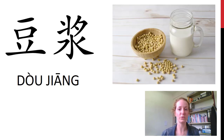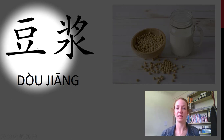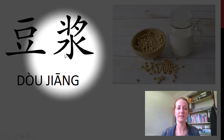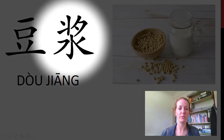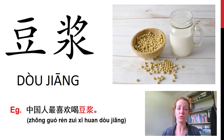下一个 — 这是中国人最喜欢的. 这是豆浆. Any guesses? 这是 soybean milk. So 豆 is bean, and 浆 — you can see at the bottom the water radical, so it's something liquid. 浆 is any sort of thick liquid. So 豆浆 is soybean milk. 中国人最喜欢喝豆浆.